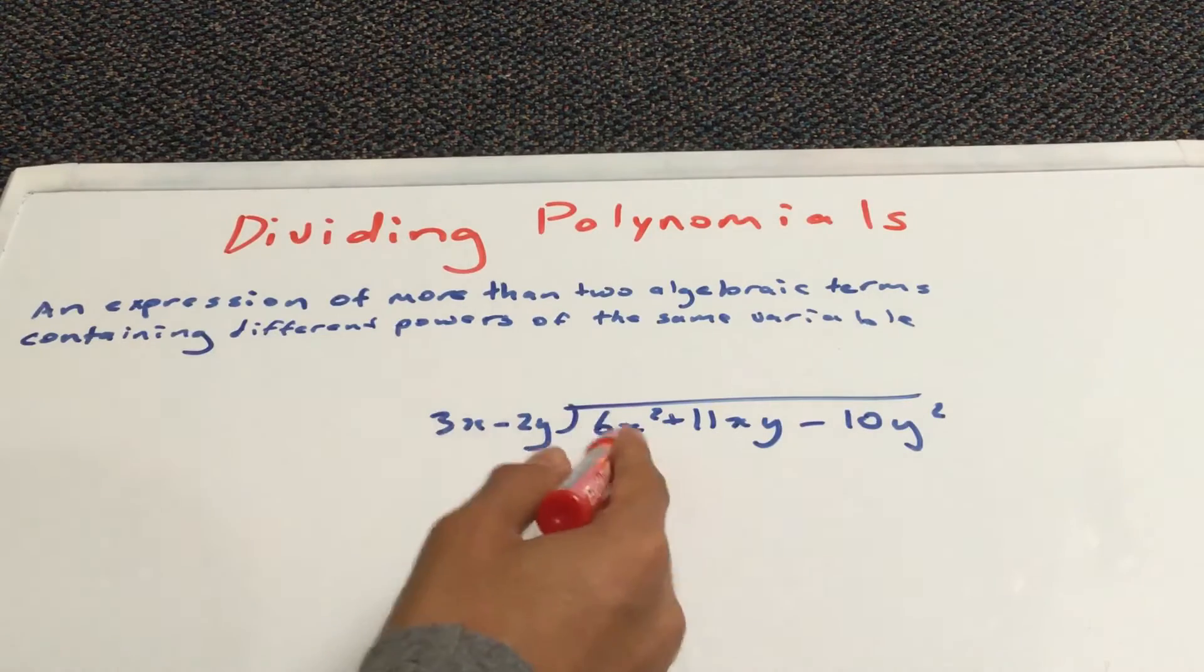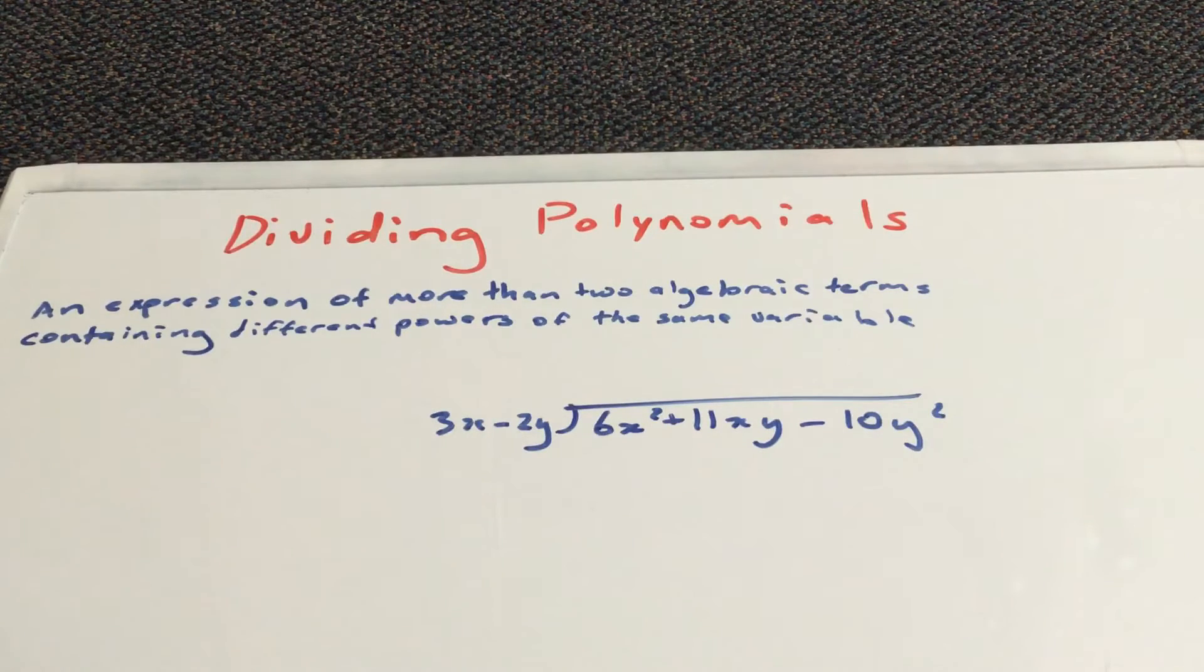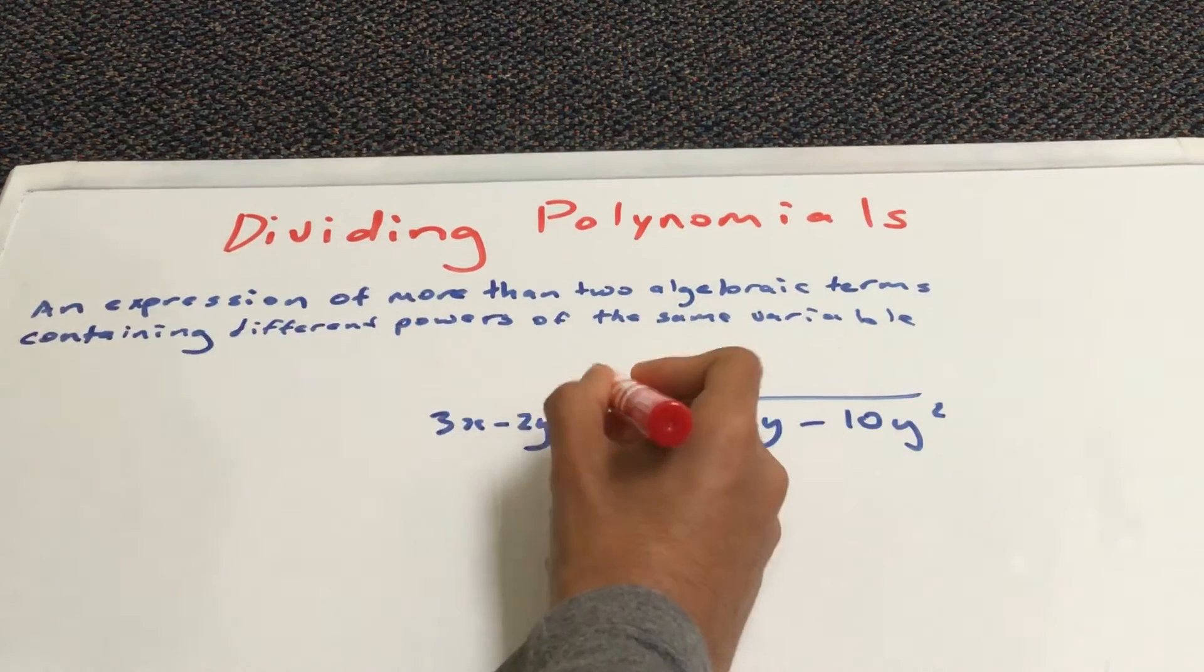So, we're going to do this slowly. First of all, 6x squared divided by 3x. That's the first thing you need to do. See if this works. So, 6x squared divided by 3x. You should get 2x.